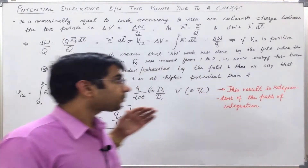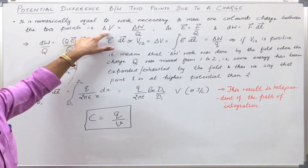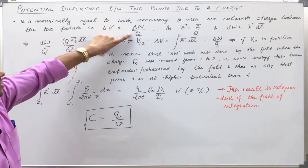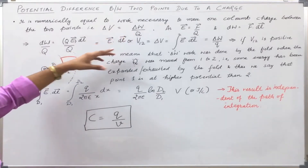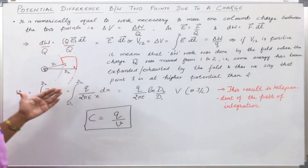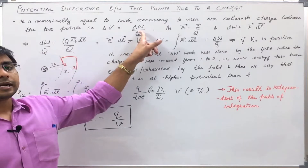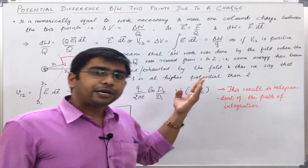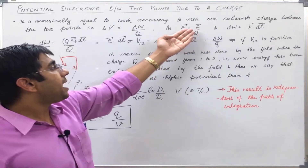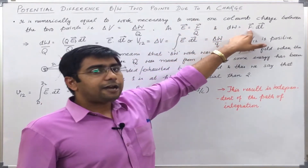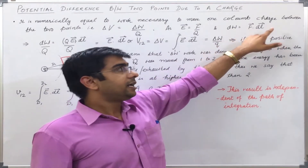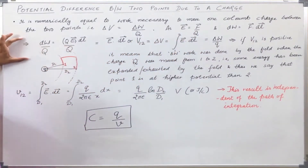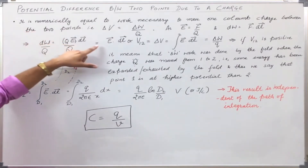Now let us formalize this. Delta V, that is potential difference between two points, is equal to the work done necessary to move the charge between those two points. This field might be created by some other charge, let us say small q, and I am moving a charge capital Q. We already know that electric field intensity can also be written as force per unit charge, that is F by q. So I can easily write work done as F dot product of the displacement. If I put the value of the force as F = qE, I will get the expression for delta V or dV which will be equal to E dot dl.